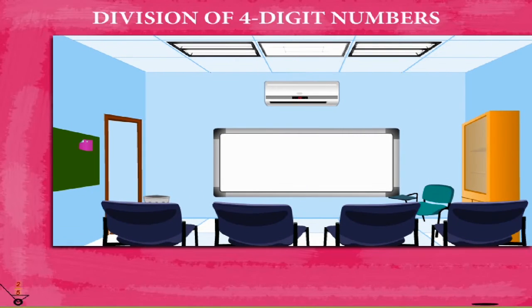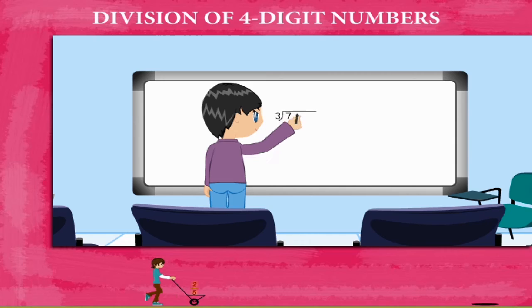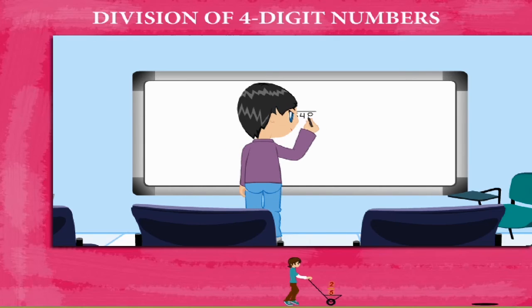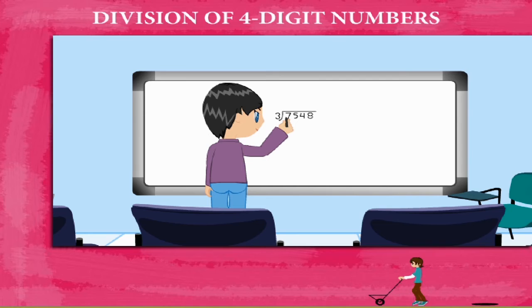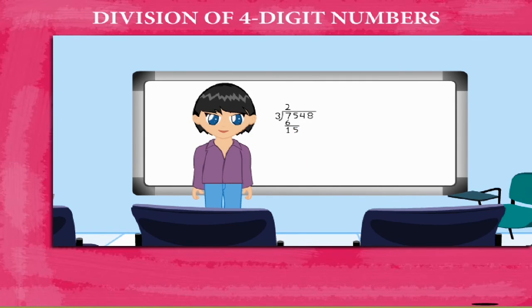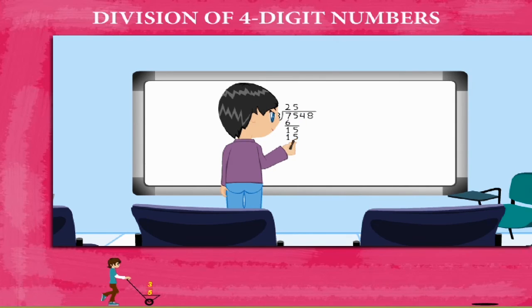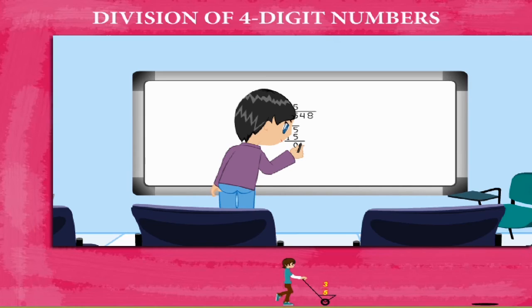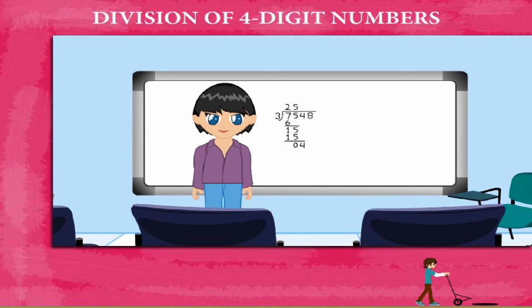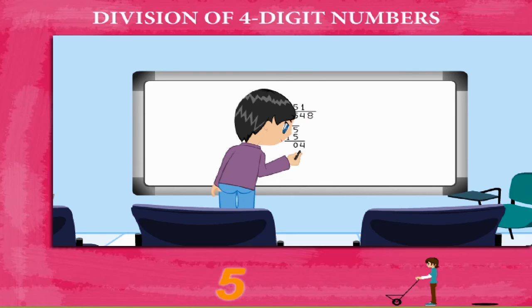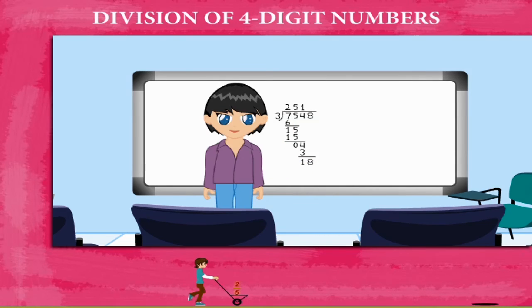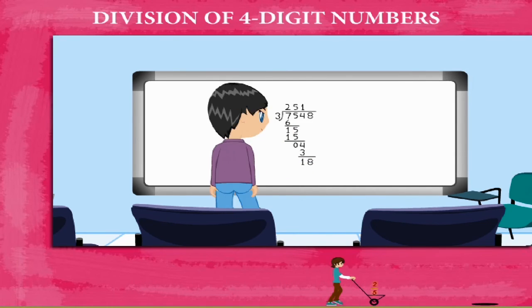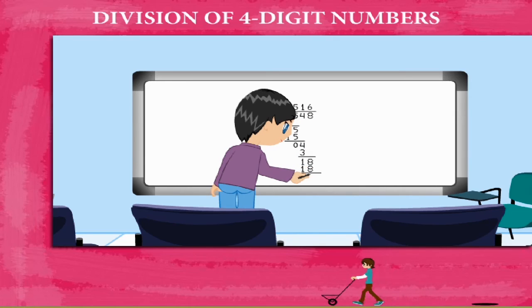Division of 4-digit numbers. Jamie is here again to divide 7548 by 3. He divides 7 by 3. He writes 2 at the top and 6 below 7. He subtracts, gets 1, and copies the next digit 5. He divides 15 by 3. He writes 5 at the top and 15 below. He subtracts, gets 0, and copies 4. He divides 4 by 3 and gets 1 that he writes at the top. He writes 3 below 4, subtracts, gets 1, and copies the last digit 8. He writes 6 at the top, 18 down below. Subtracts and gets 0. His quotient is 2516.